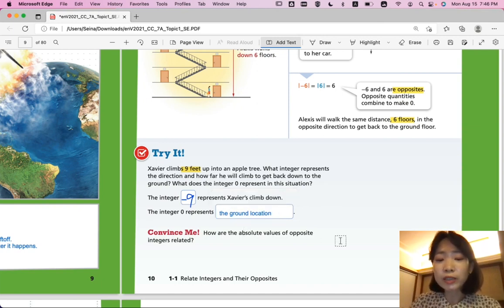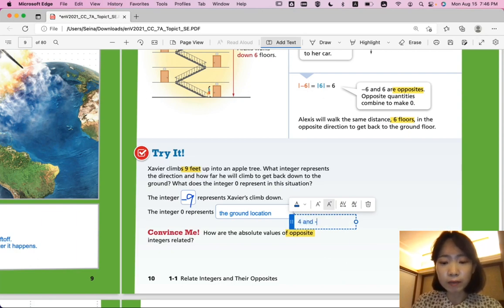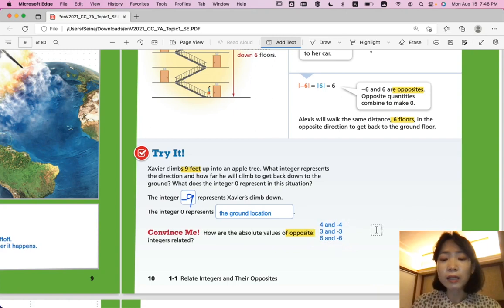How are the absolute values of opposite integers related? So opposite integers again. What are opposite integers? So opposite integers are like four and negative four. Three and negative three. Six and negative six. What else? Any positive number to that negative number are all opposites.